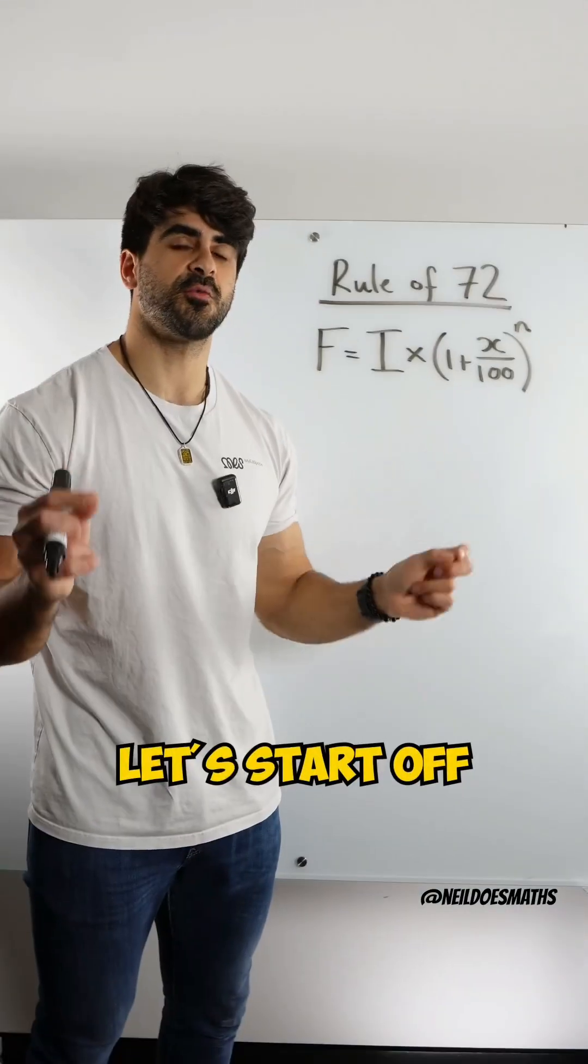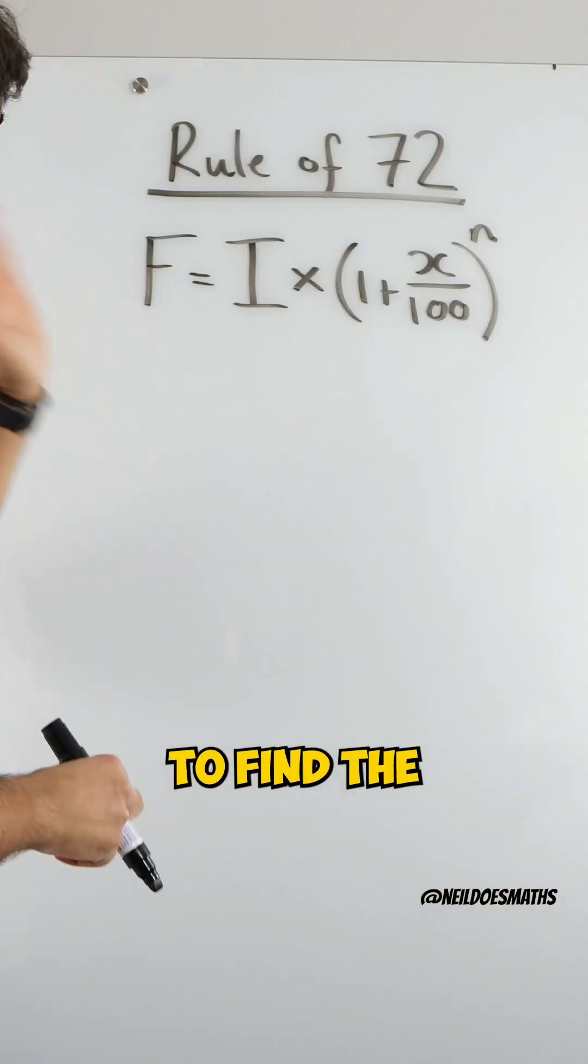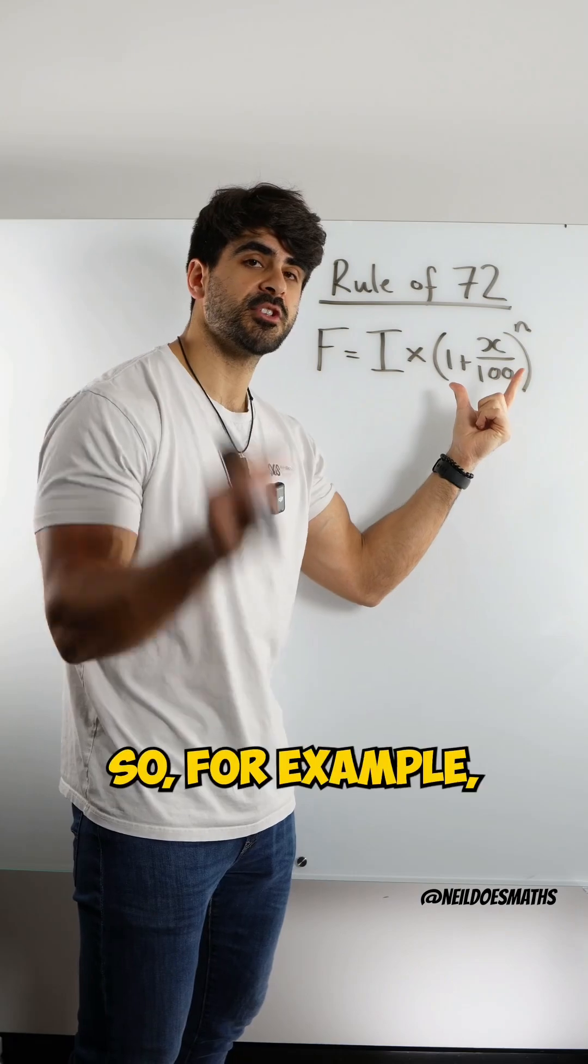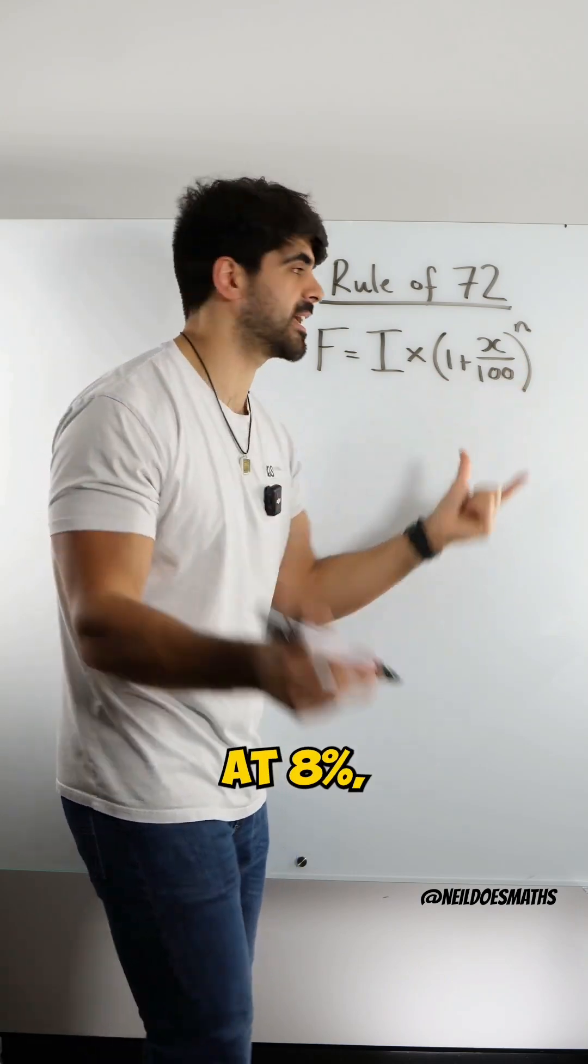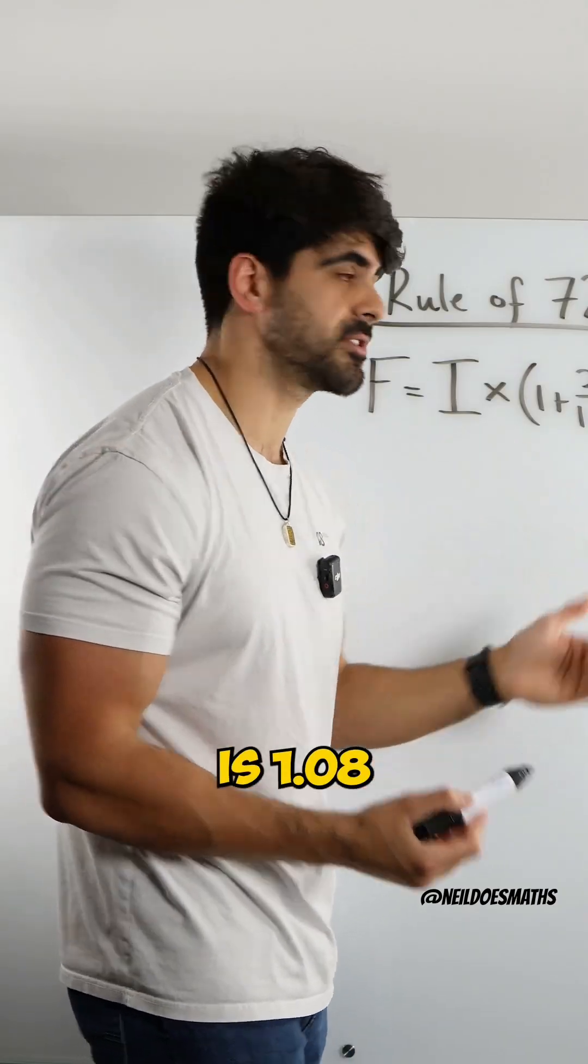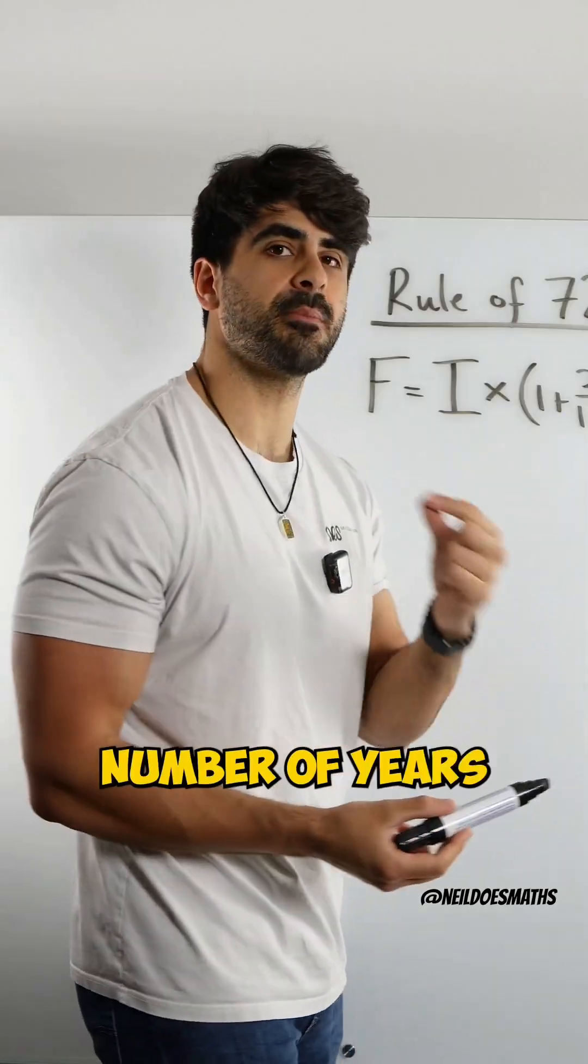Let me prove it to you. Let's start off with our compound interest formula. To find the final value of your investment, you take your initial value multiplied by your multiplier. So if you invest your money at 8%, you do 8 divided by 100, which is 0.08 plus 1, that's 1.08 to the power of n, where n is the number of years.